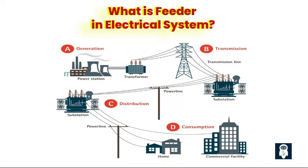Feeder lines are responsible for transmitting electricity over relatively long distances, connecting the main power source, such as a substation, to distribution transformers or directly to end users. Feeder lines are designed to handle a certain amount of electrical load or demand. Depending on the size and capacity of the network, there can be multiple feeders within a distribution system, each serving a different geographic area or group of consumers.